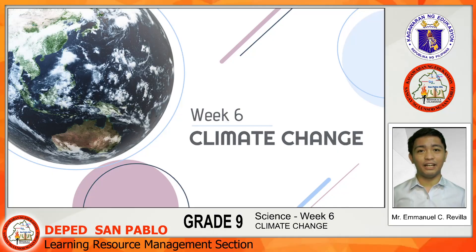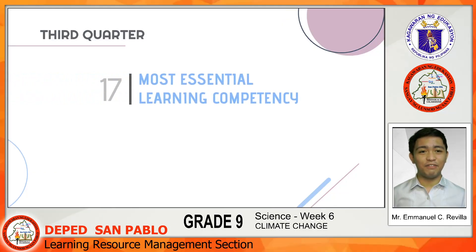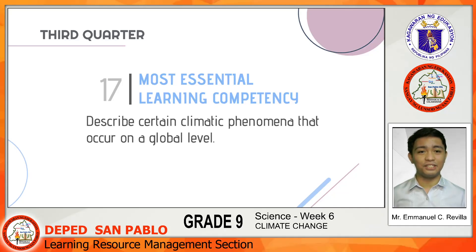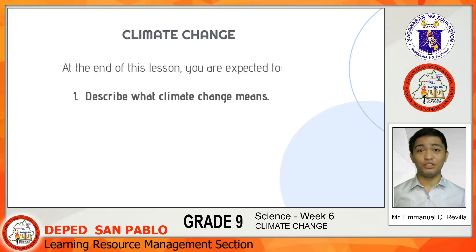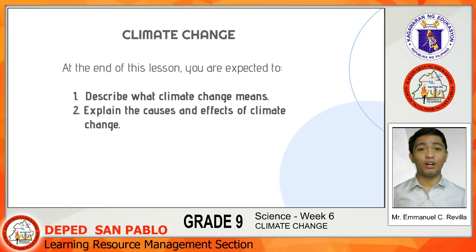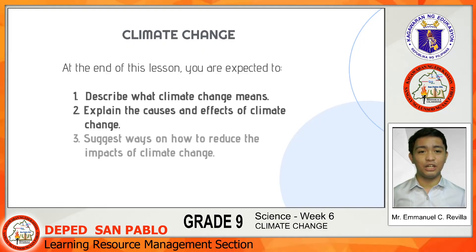Our lesson for today is all about climate change. This is based on the 17th most essential learning competency in Science 9, which is to describe certain climatic phenomena that occur on a global level. At the end of this video lesson, you are expected to describe what climate change means, explain the causes and effects of climate change, and suggest ways on how to reduce the impacts of climate change. Are you ready to listen and learn? Let's begin.